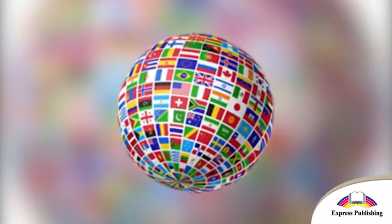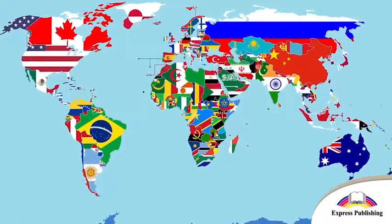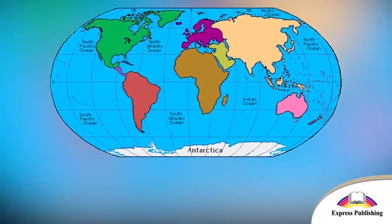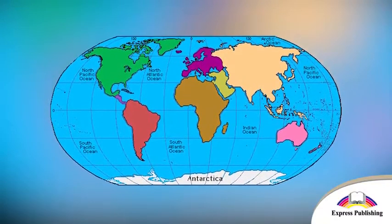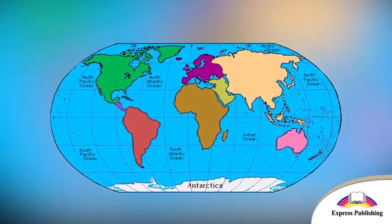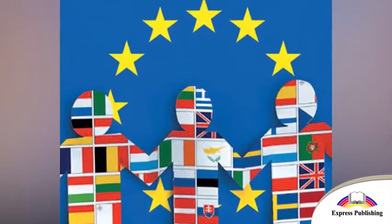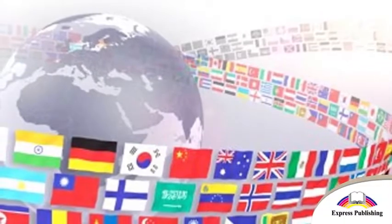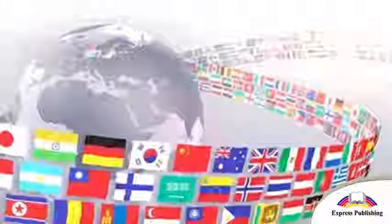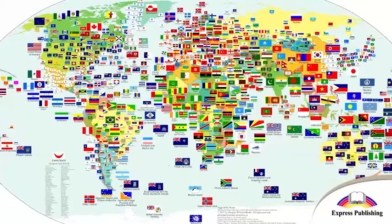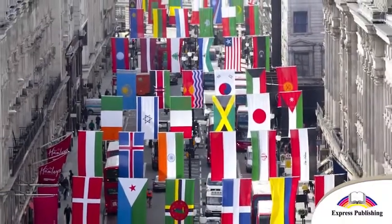The world is a big place. There are seven continents: Europe, Asia, Africa, North America, South America, Oceania and Antarctica. There are almost 200 countries. There is a flag from each country, and there are people in all the countries of the world.